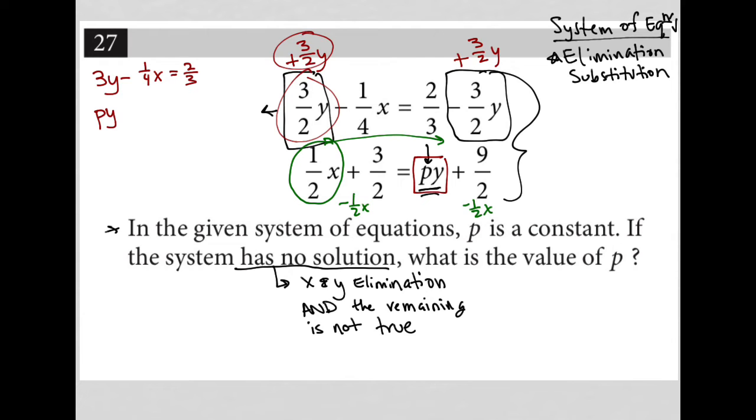So I would get a minus one half X here with my pY. And then I have my nine halves here, but it has a like term with the three halves. So I also need to subtract three halves from both sides. And nine halves minus three halves is equal to six halves, which is equal to three. So this would just be equal to three.